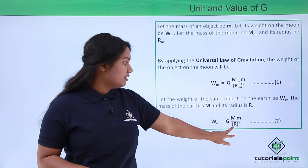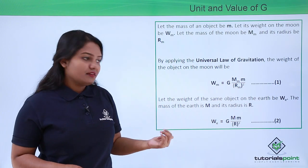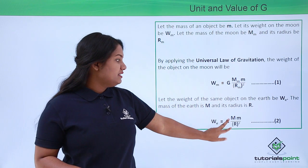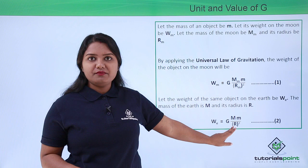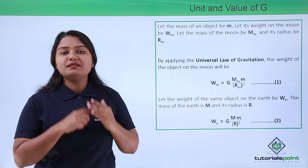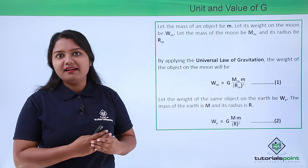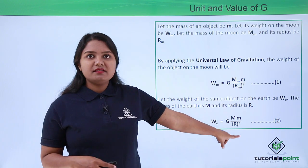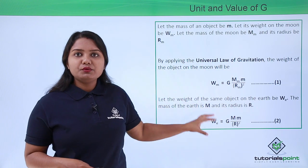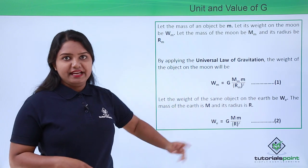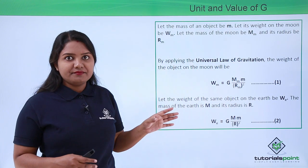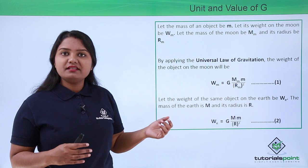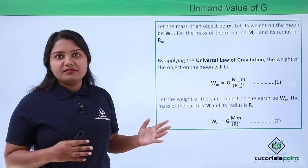Similarly, the weight of the same object on the surface of the earth, also from the universal law of gravitation, is W_e equals G times M times m divided by R squared, where capital M is the mass of the earth, small m is the mass of the object, and capital R is the radius of the earth. This is equation 2. Equation 1 gives the weight on the moon; equation 2 gives the weight on the earth.